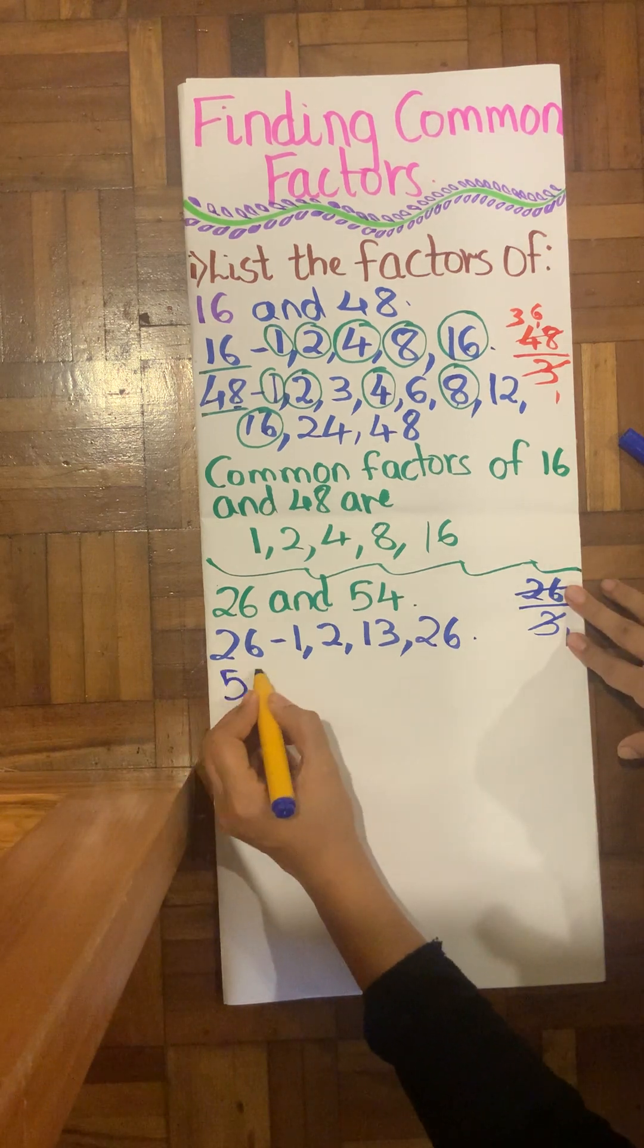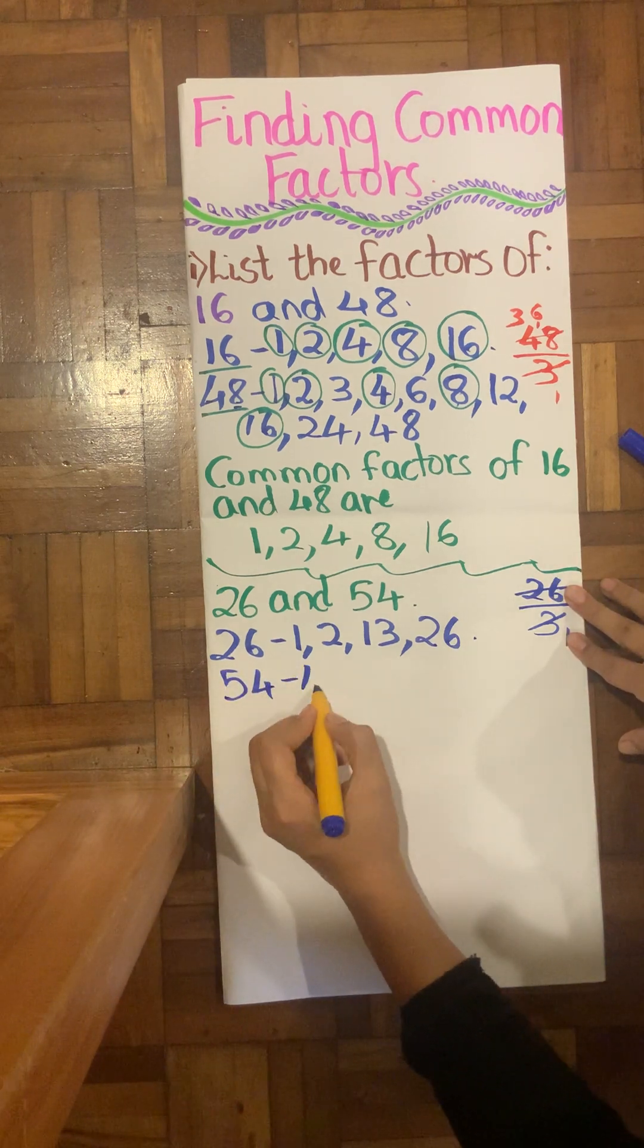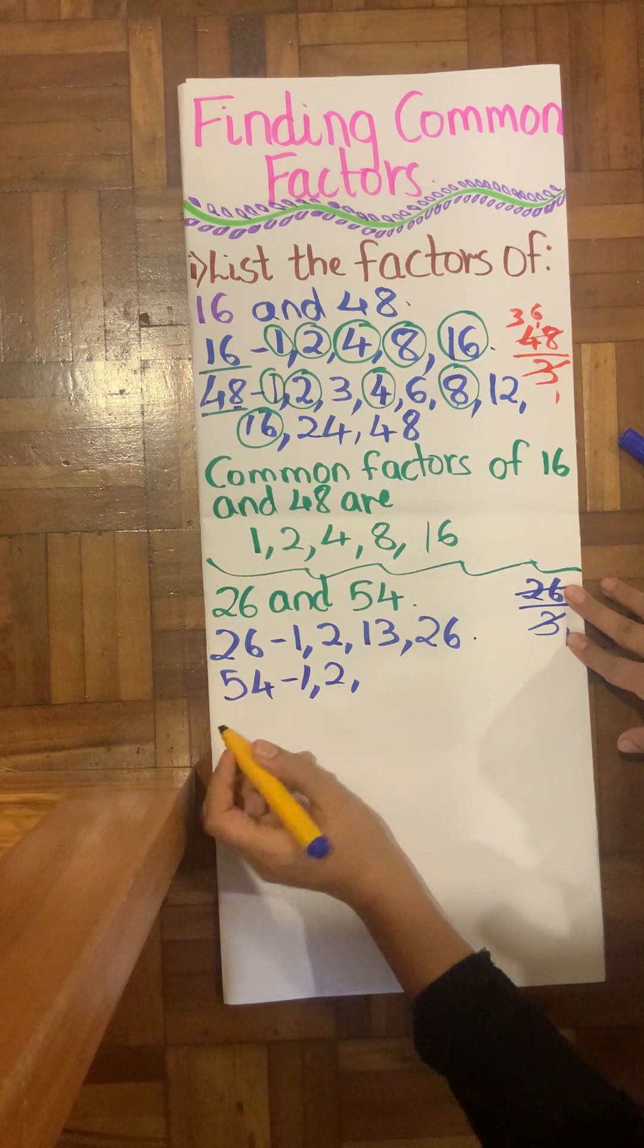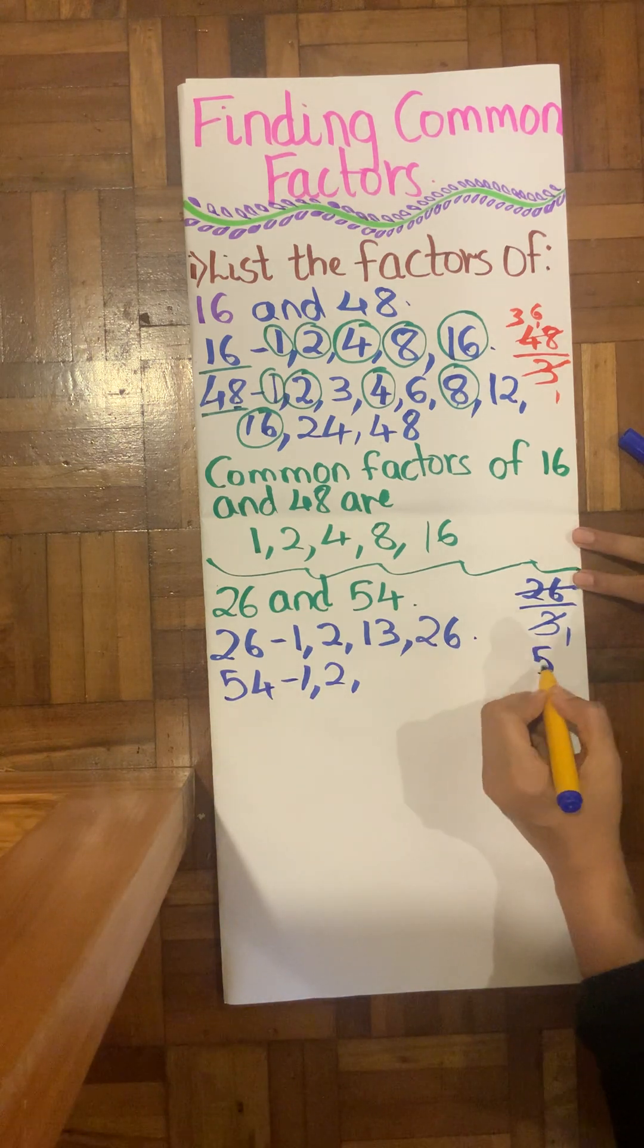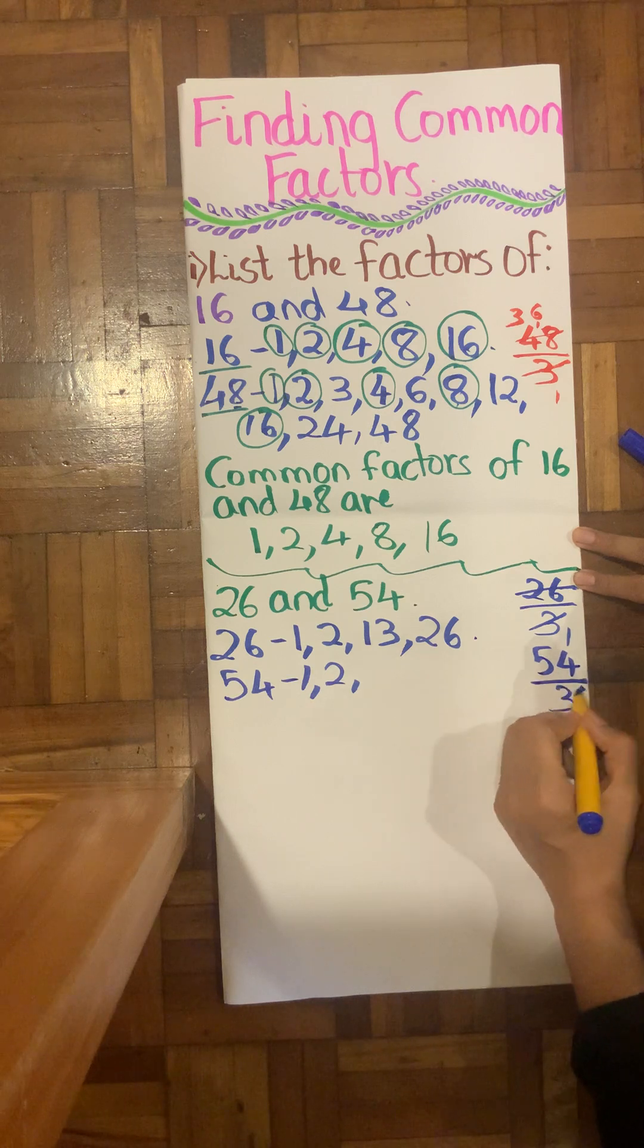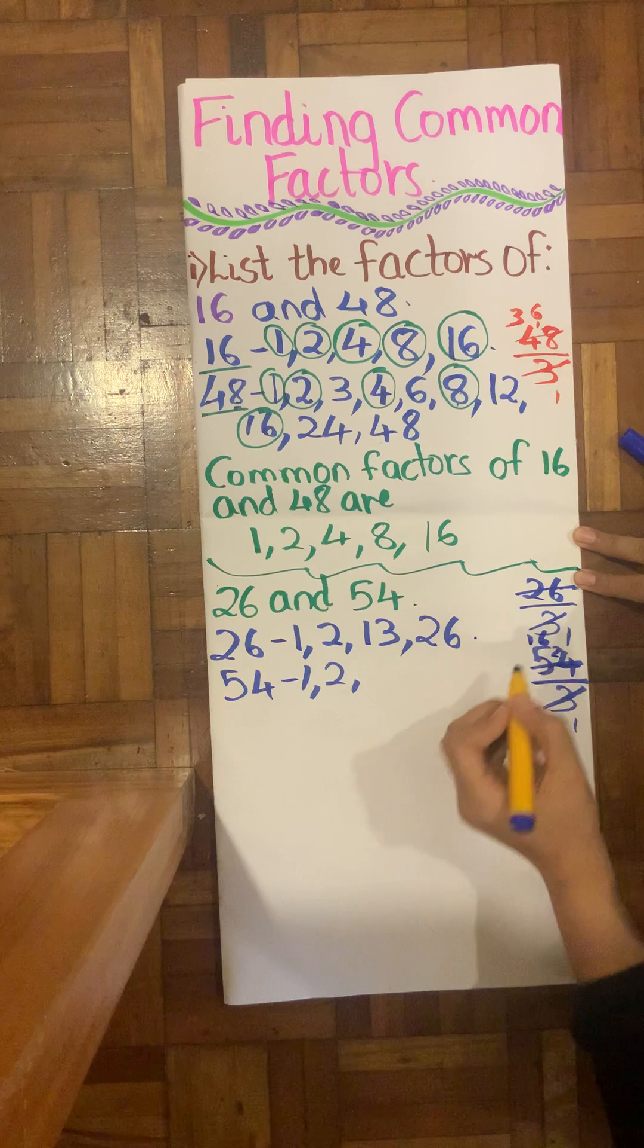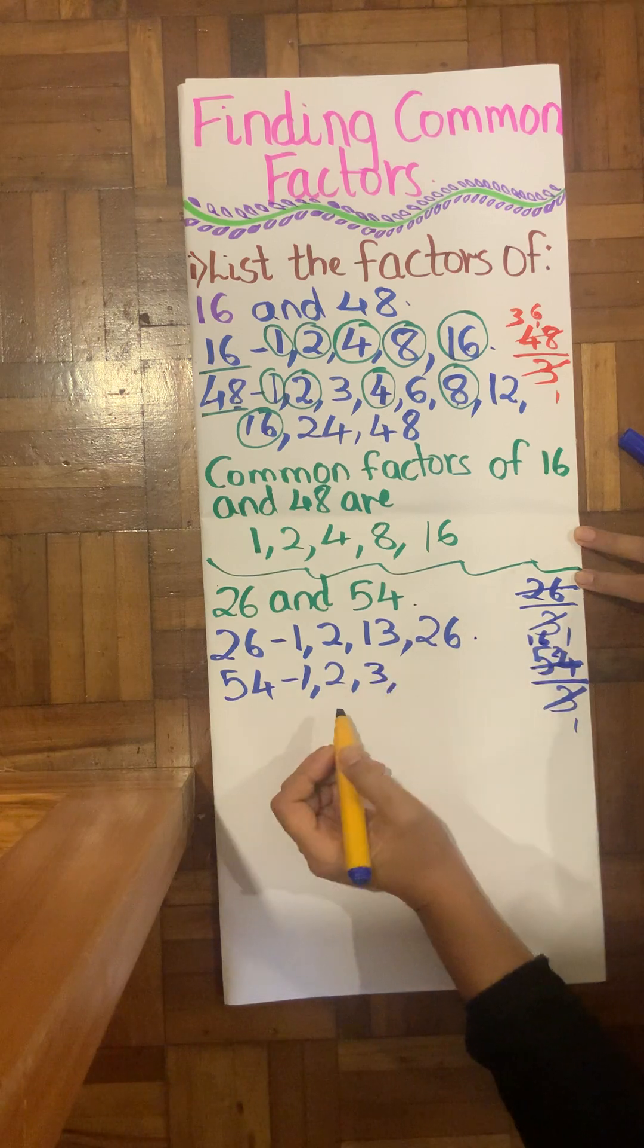Next number that I have is 54. 1 of course, 2 of course, because it ends with even number. In 3 times table let's check if 54 comes. So 3 times 1 is 3, 2 carry. 3 times 8 is 24. Yes, 54 comes in 3 times table.